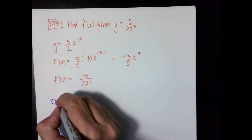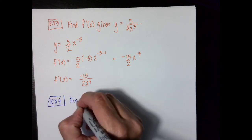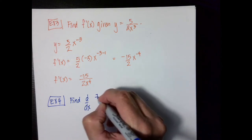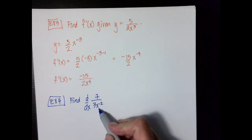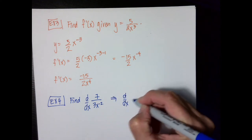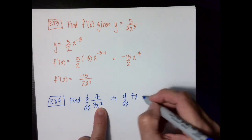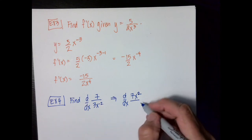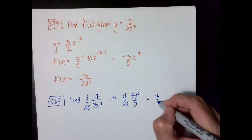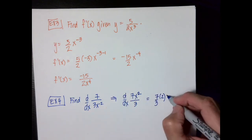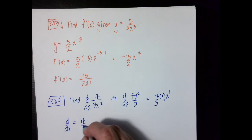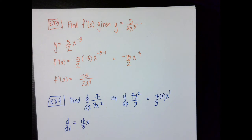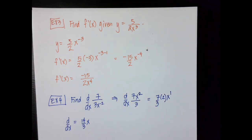Example number four: find the derivative of 7 over 3x to the negative 2. Again I rewrite it — moving x to the negative 2 from the denominator gives 7x squared over 3. Taking the derivative: the constant 7 over 3 stays, the power 2 goes out front, 2 minus 1 is 1, so the derivative equals 14 over 3 times x. Sometimes we just have to be a little careful about how we manage our math. Alright, that's it for today — I have a bug keeping me company on our notes. See you soon.